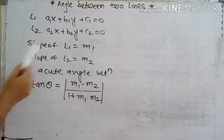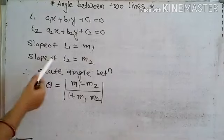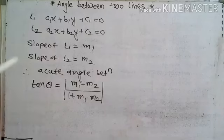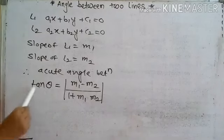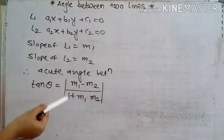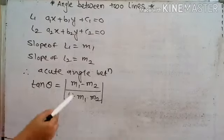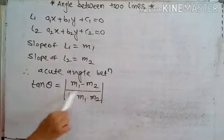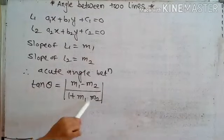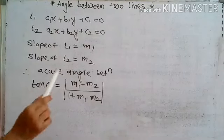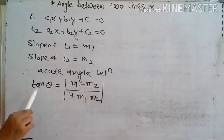M1 means the slope of the first line and M2 means the slope of the second line. The formula for the acute angle between the lines is tan theta equals M1 minus M2 upon 1 plus M1 into M2. Now we will see some examples on that.